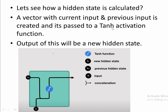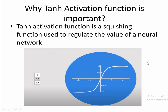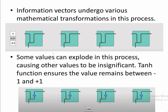The hidden state is calculated using the previous state h(t-1) and the current input x(t) to produce the new hidden state h(t), with a tanh activation function. Tanh is a squishing function that helps regulate the value of a neural network from minus 1 to 1. The information vector calculated under various mathematical transformations is regulated to the range of minus 1 to 1 by the tanh function.